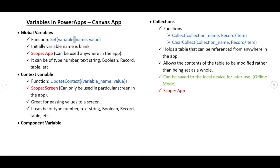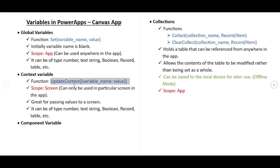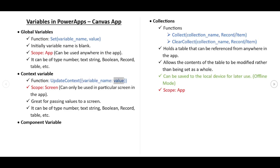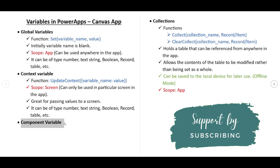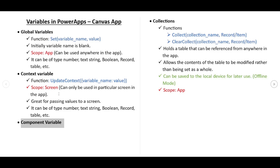Initially the variable will be blank. Talking about context variable, it is very similar to global variable, except its scope is within the screen only. So if we have multiple screens, a context variable can only be used in a particular screen. The syntax is: UpdateContext, then in normal brackets a curly bracket, then variable name colon value. Component variable is similar — it's the variable used within a component, which you can think of as a screen.